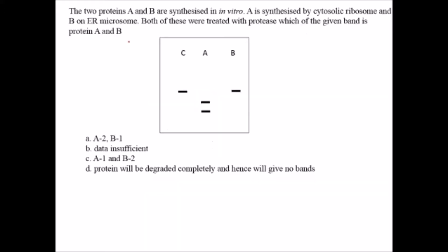The first question: two proteins A and B are synthesized in vitro. A is synthesized by cytosolic ribosomes and B on ER microsomes — ER being the endoplasmic reticulum. Both were treated with protease. Which of the given gel bands is protein A and which is protein B? Protein B is synthesized on the endoplasmic reticulum with the help of ribosomes.